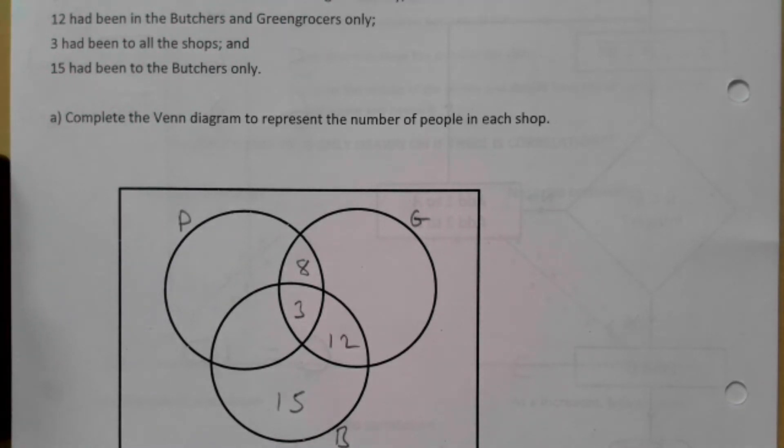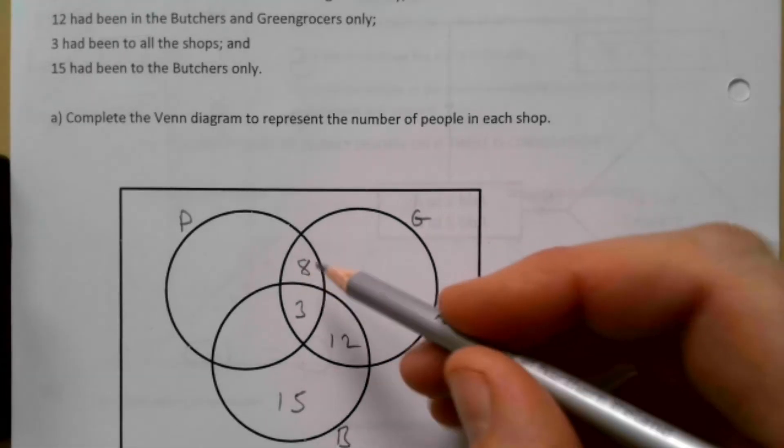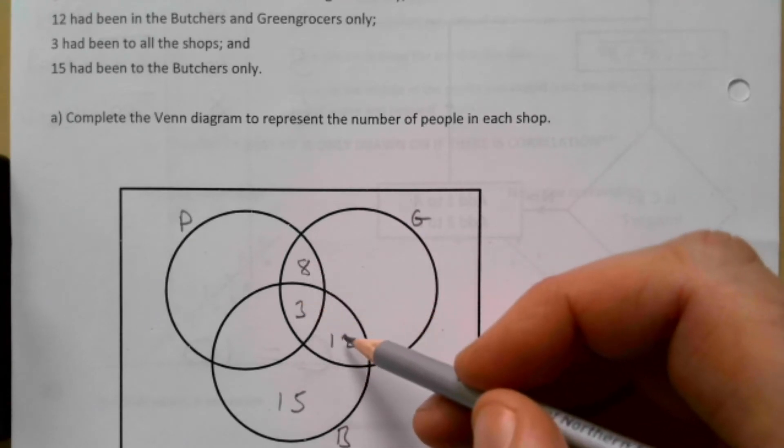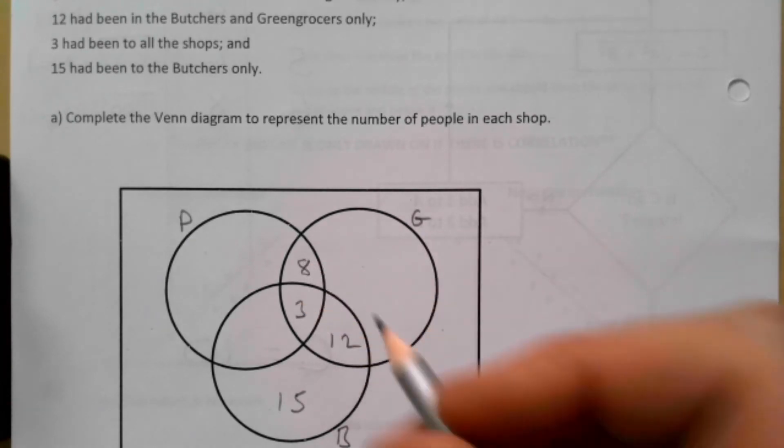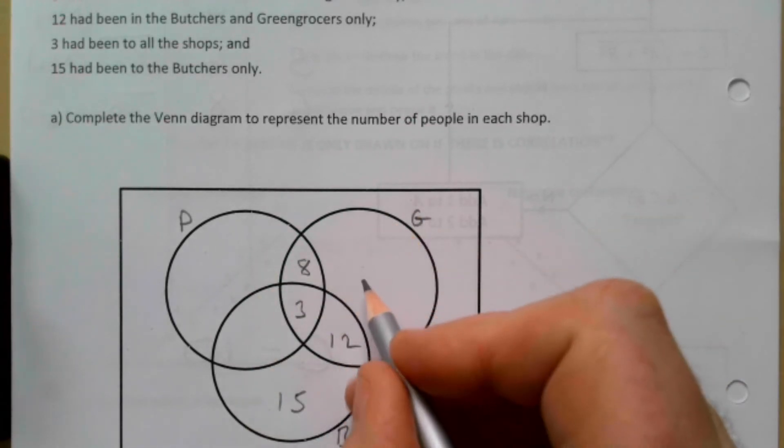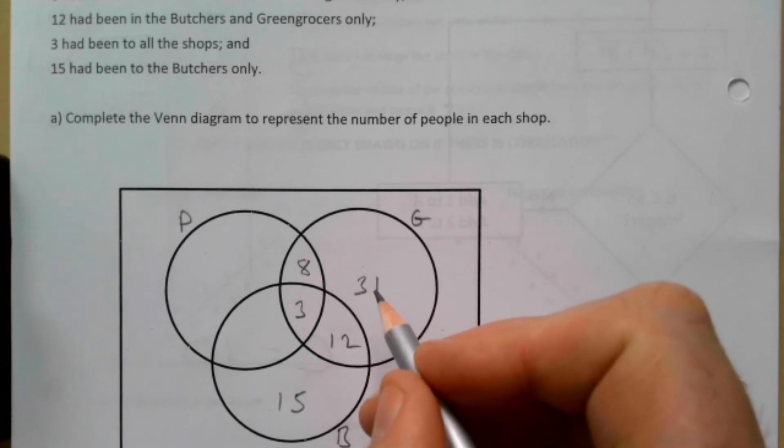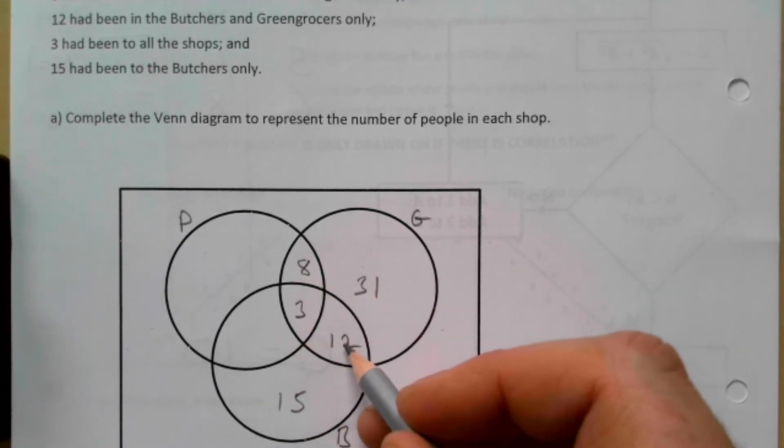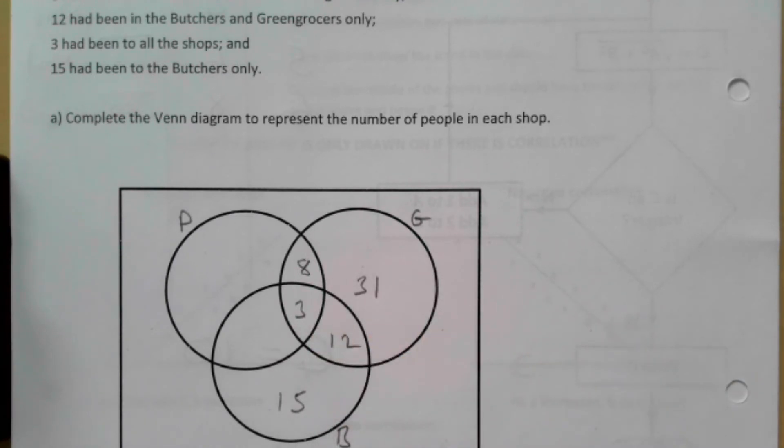It says 31 and now we can't do the Post Office yet, so let's go to the Greengrocers which is 54. These add to 24, these add to 23, so taking that away from 54, which is the total of this, is then going to be 31. So that's going to be 20, 51, 54, yeah.